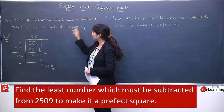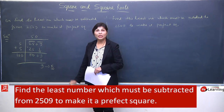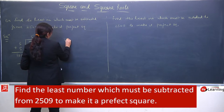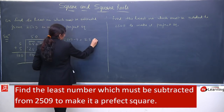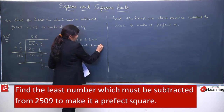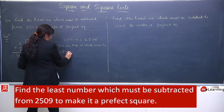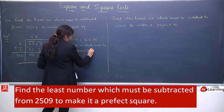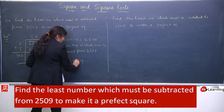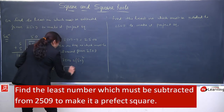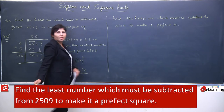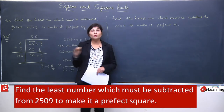Ab humara question kehta hai: find the least number which must be subtracted from this. So, 9 is the least number which should be subtracted. Toh ab kya step likhenge? 2509 - 9 = 2500. So, 9 is the required number which must be subtracted from 2509, and as a result aapko mila 2500, which is a perfect square of 50. Is question mein 9 extra part tha, jise humne remove kar diya - means subtract kar diya.